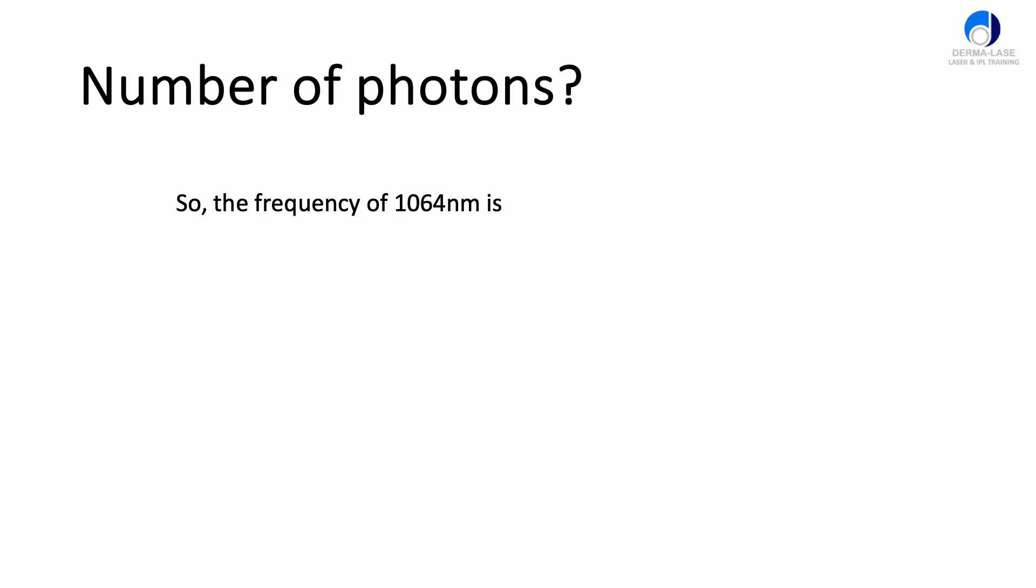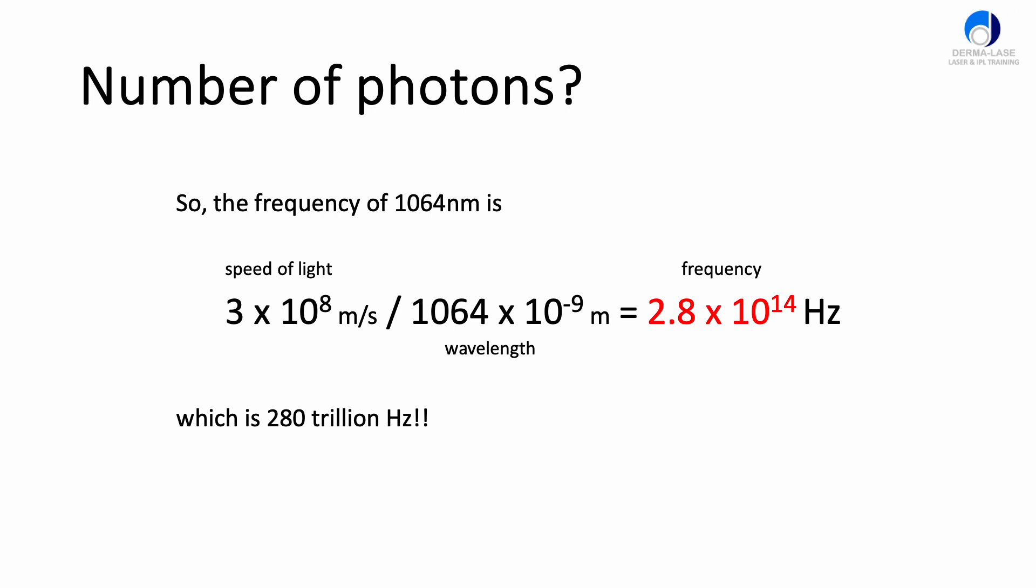For example, the frequency of 1064 nanometer beam from an ND YAG laser is 3 times 10 to the power 8 meters per second, that's speed of light, divided by the wavelength which is 1064 times 10 to the minus 9 meters, which gives us a frequency of 2.8 times 10 to the power 14 hertz, which is 280 trillion hertz. So it's an extremely high frequency.